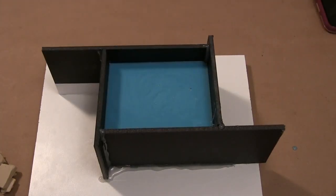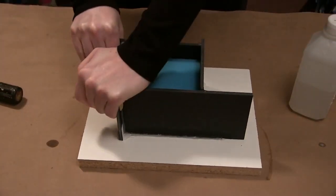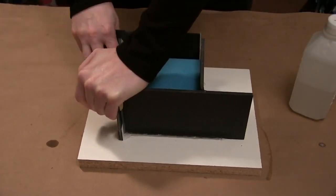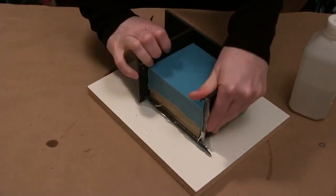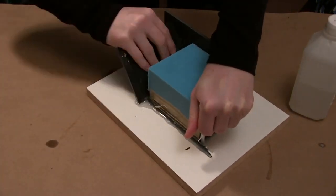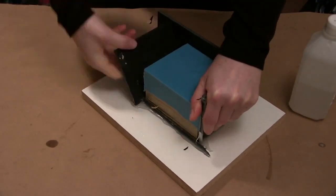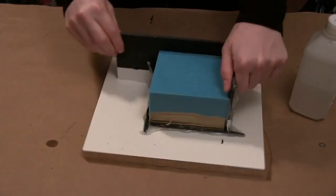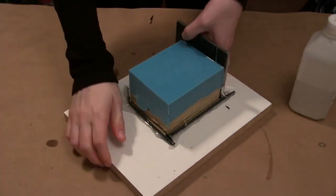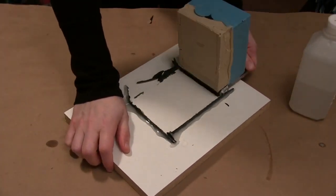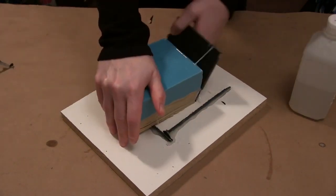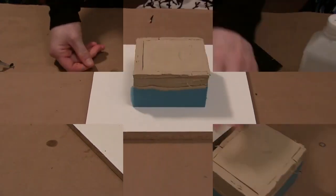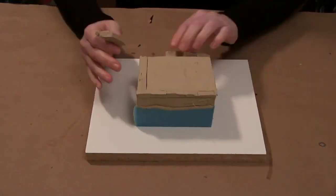Once your material is cured, you can begin to take apart your mold box. I'm just gently prying the walls off of the silicone and the clay, I'm trying not to disturb the clay, and I'll just remove them all. I'm going to quickly clean off the board. The next step would be to remove the clay.